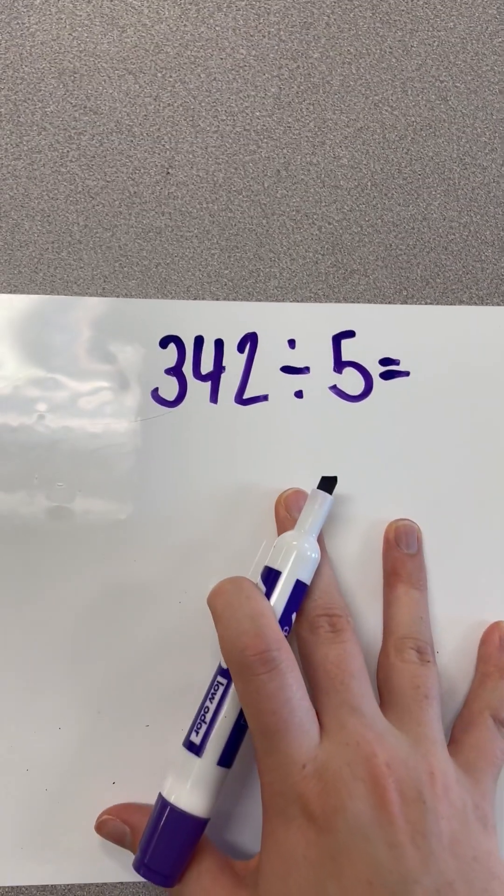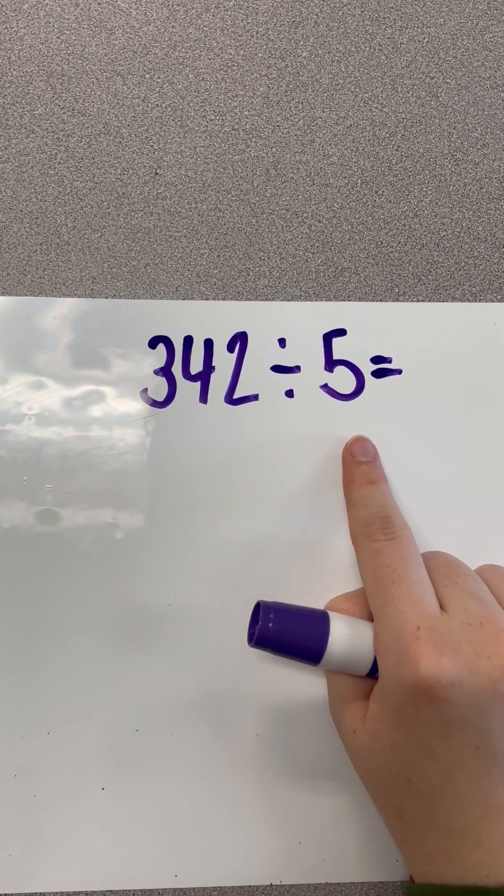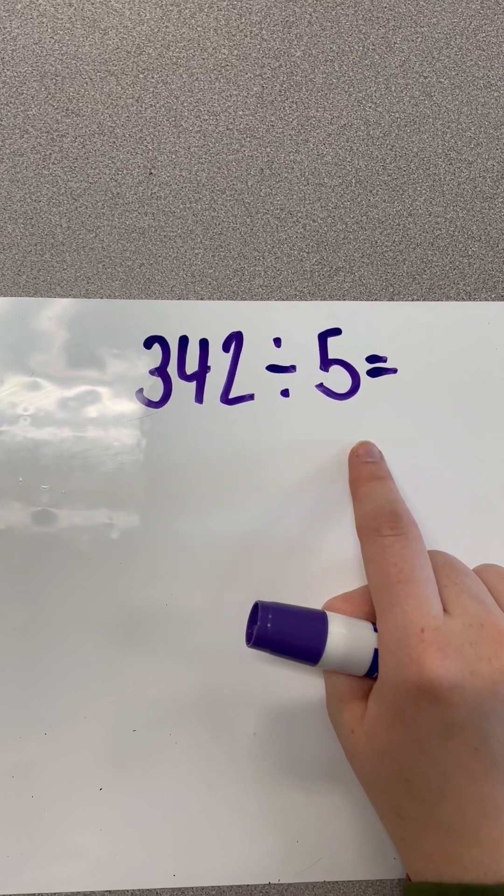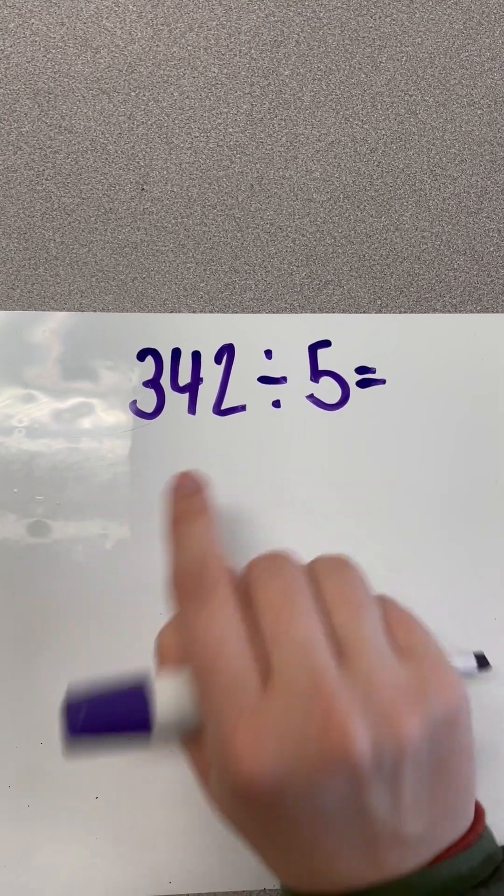Now, I'm going to look at this problem and know that I'm going to have a remainder because if we know our multiples of 5, we know numbers that end in 0 and 5 are divisible by 5. However, this ends with a 2. So, we're going to go ahead and get started.